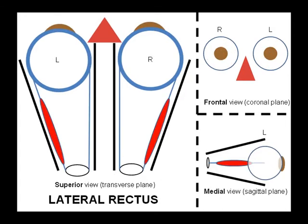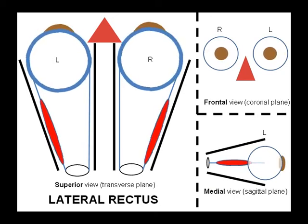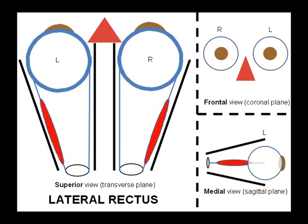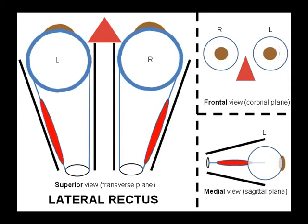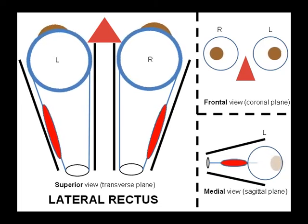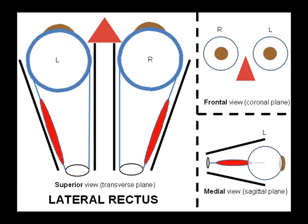Here we can see lateral rectus. It takes its origin from the tendinous ring and inserts on the lateral aspect of the eyeball. When lateral rectus contracts, it pulls the lateral aspect of the eyeball posteriorly, thus abducting. We can see in the frontal view both eyes abducting, and in the medial view the left eye moving away from us. Thus lateral rectus moves the eyeball in only a single plane.